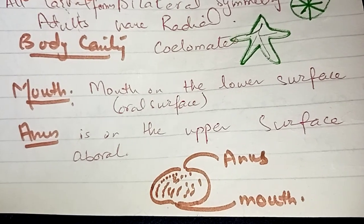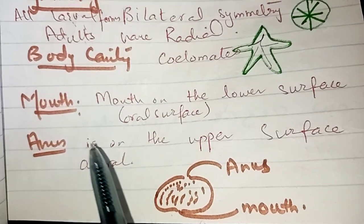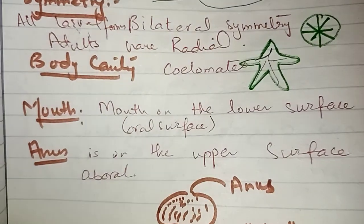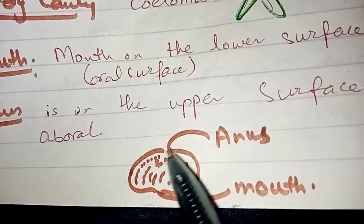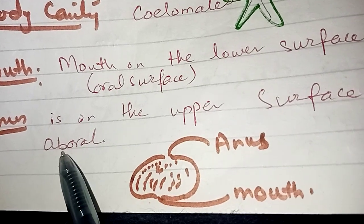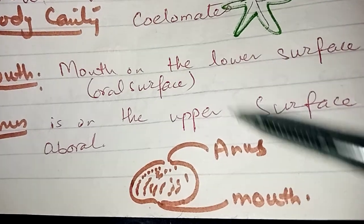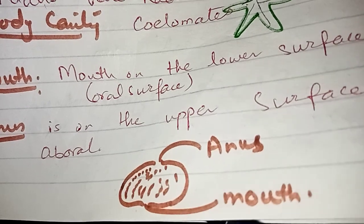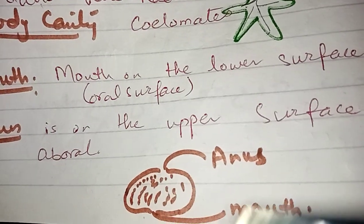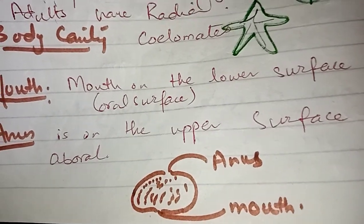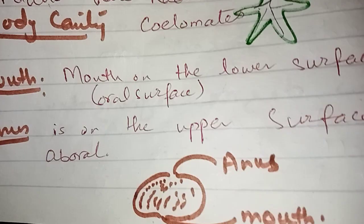The body cavity orientation: the anus is on the upper surface. This is called the aboral surface, and the mouth is on the ventral surface. For example, in a sea urchin, the anus is on top — 'aboral' means away from the mouth. So the mouth faces the ventral side and the anus is on the upper dorsal surface.